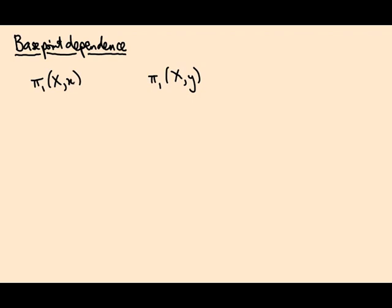And you might ask, well, what happens if we use a different base point? Do we get a different group? Well, yes, we get a different group. But what we're going to see in this video is if I have a path from x to y, let's say delta, then I actually get an isomorphism from π₁ of X at x to π₁ of X at y. It's an isomorphism.